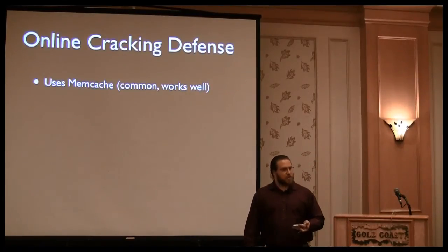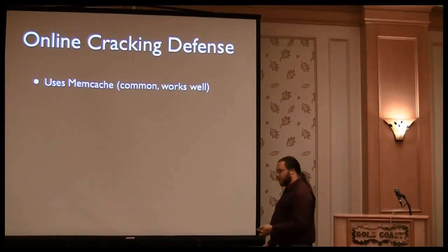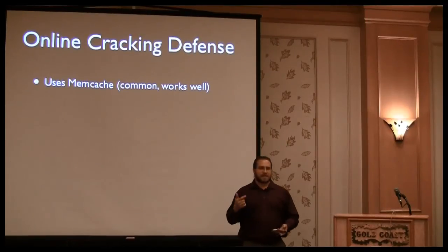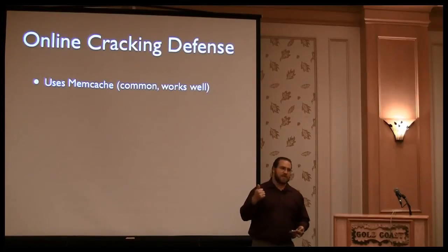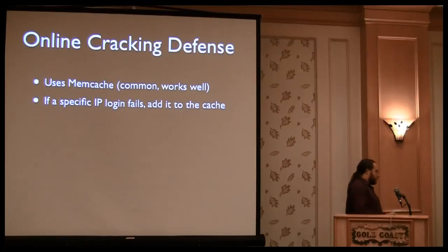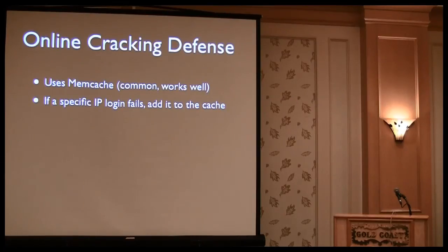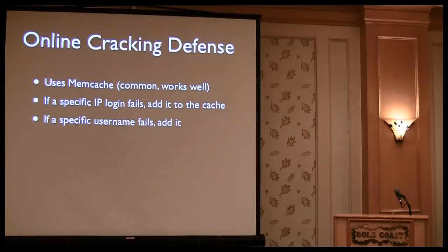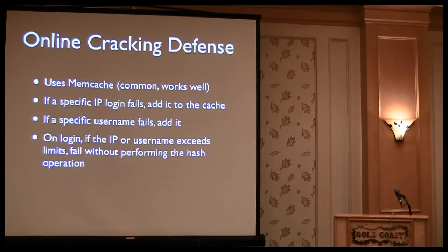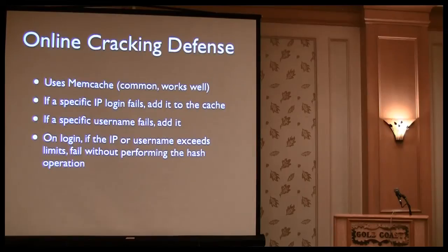My proposed system is to use Memcache as the backing store, primarily because Memcache is fast, it's commonly available in web environments, and there are interfaces to it from pretty much every language. If a specific IP address fails its login attempt, we add that IP to Memcache and increment a counter using atomic operations. If a username fails its login request, we add that and put a counter on it. For each login attempt we do a quick check: based on Memcache, is this IP address or username exceeding their login limits? If so, we don't even bother doing the password hashing function — we just say 'this doesn't work' and tell them no.